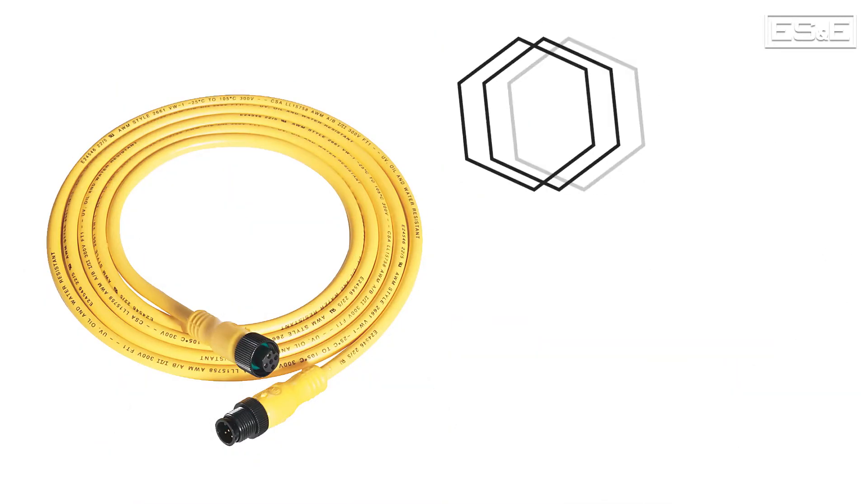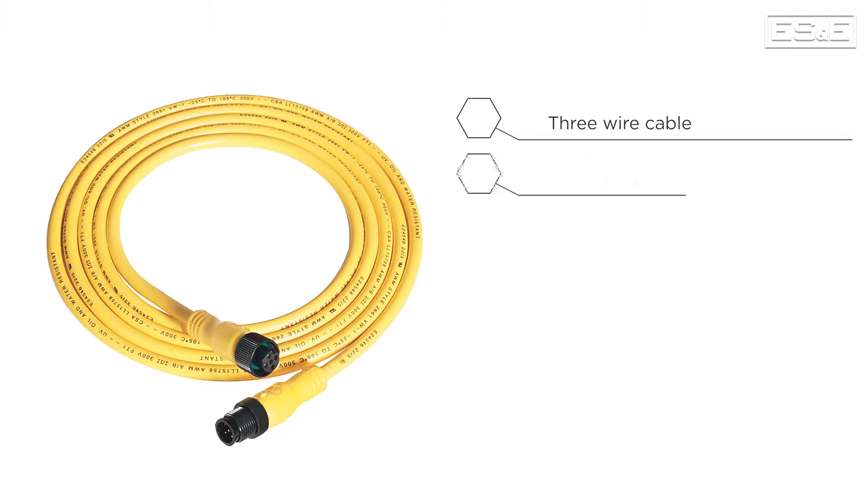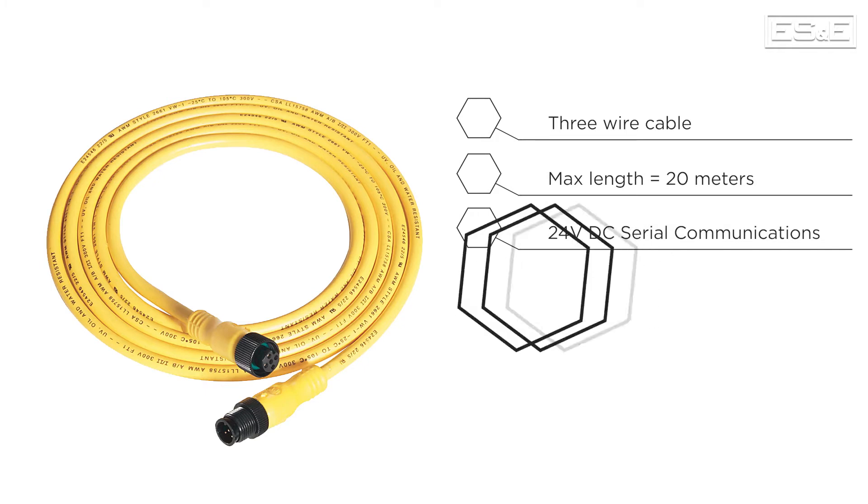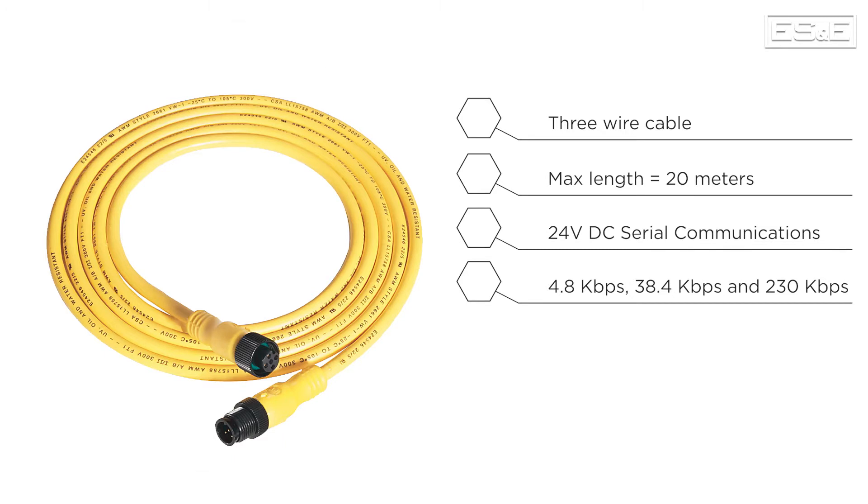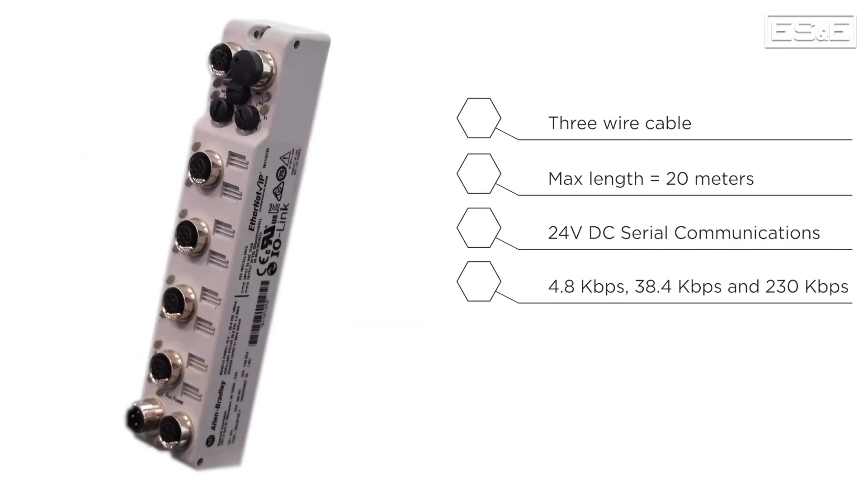The end device communications are established via a standard three-wire cable that is no more than 20 meters long. IO-Link utilizes a robust 24-volt DC serial communication system that transmits at three potential rates. The IO-Link Masters are capable of processing all three rates, and they are also capable of processing digital signals and analog values.